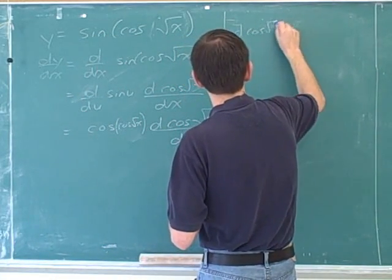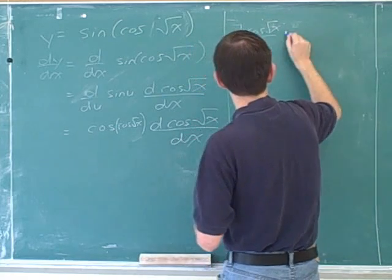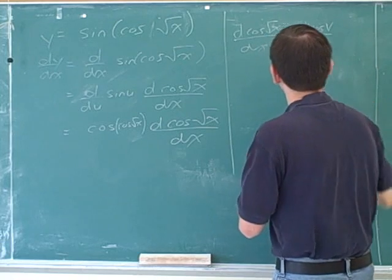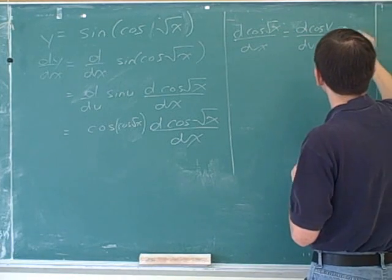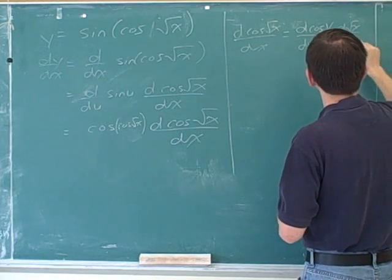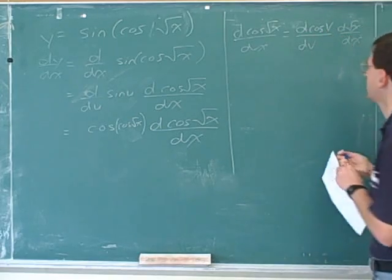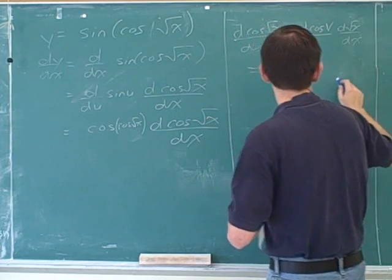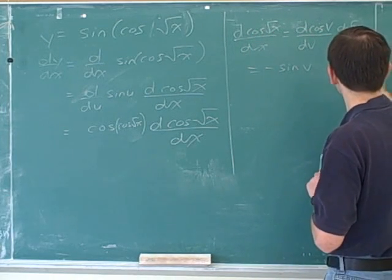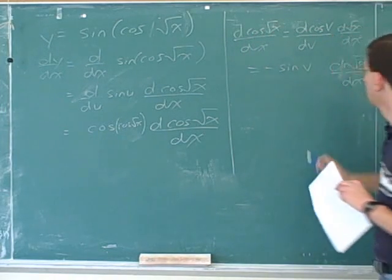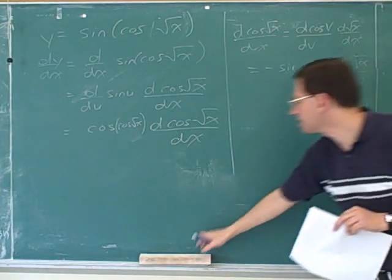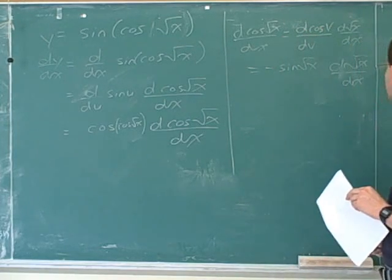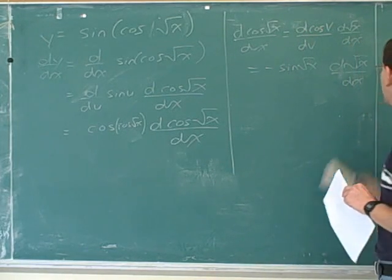I'll split that off. So, derivative of cosine root x. That's just the derivative of the cosine times derivative of root x. So now the outside term is the cosine. Well, the derivative of that is the negative sine. And this should be evaluated at the inside, which is root x.